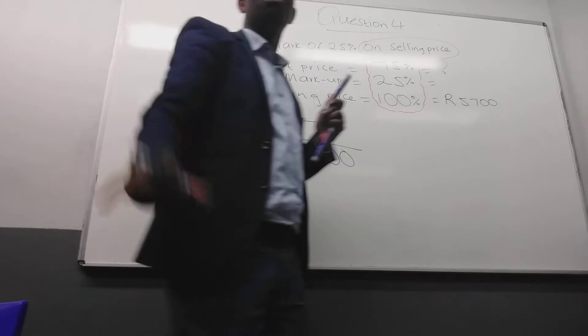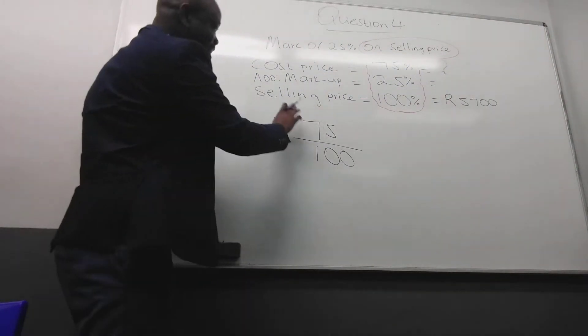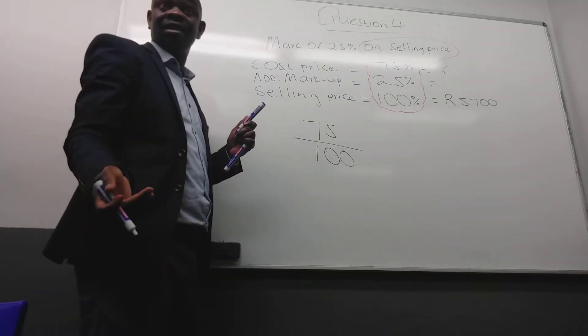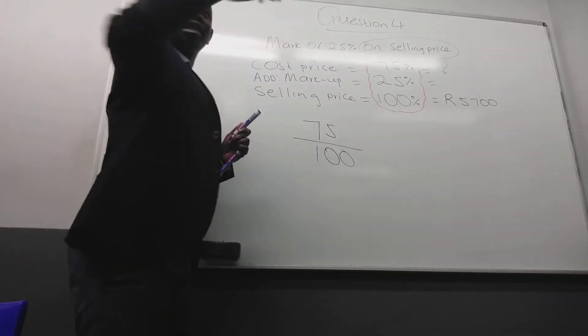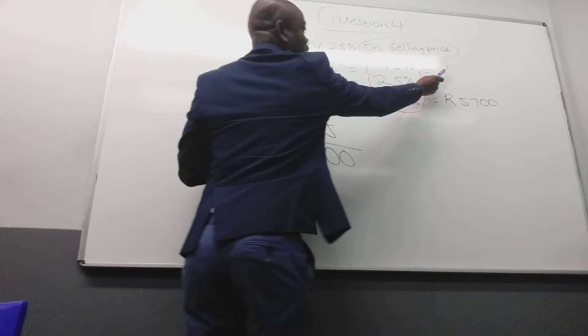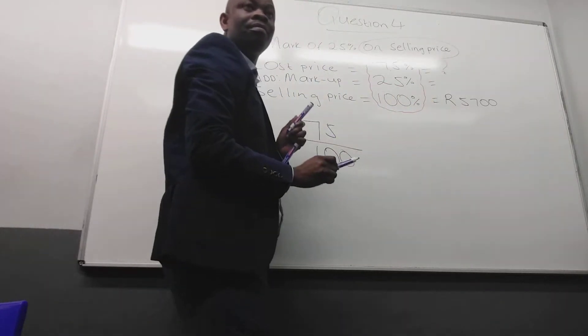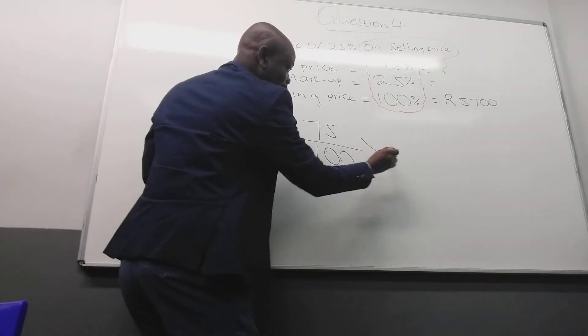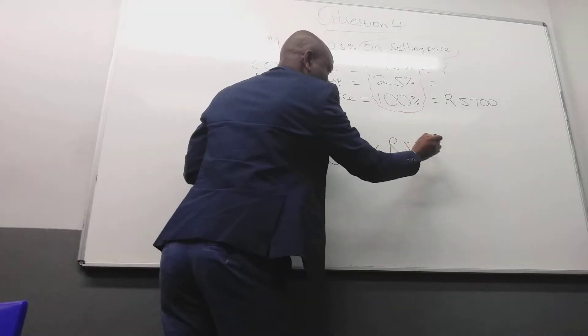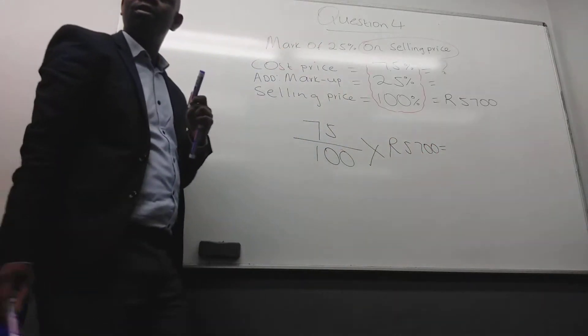Why did I put 75% on top? Because I'm looking for the cost price. Next time they're going to ask for the selling price, I'm going to put 100% on top. But we need to divide by what we have been given. We have been given which one? The selling price. So you must divide by the percentage of the amount given. I want you to master this. You will never go wrong. If you master it, you will never go wrong. So the important thing is for you to come up with this.